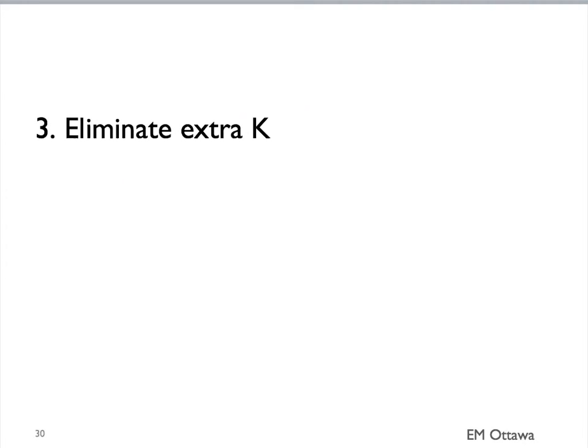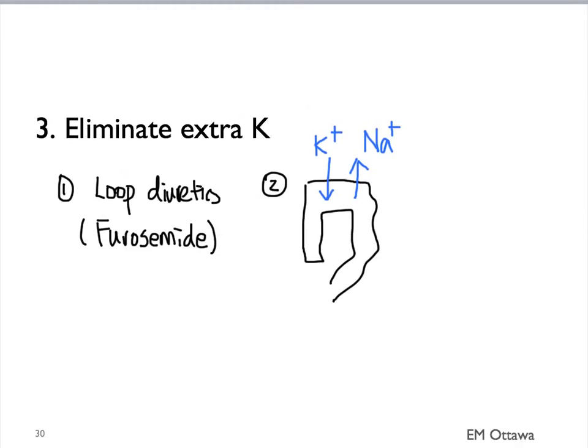Lastly, we may wish to eliminate extra potassium from the body. It can be done by giving loop diuretics such as furosemide. We sometimes use a binding agent in the GI tract. In these resins, potassium is being extracted from the serum in exchange for sodium or calcium. Since it usually takes hours for it to work, it is mostly used in the inpatient setting. Lastly, the most efficient method of eliminating extra potassium from the body is dialysis.